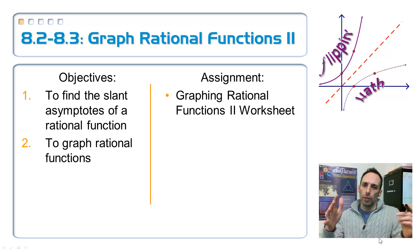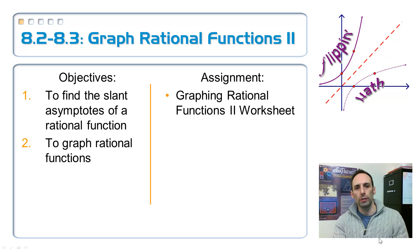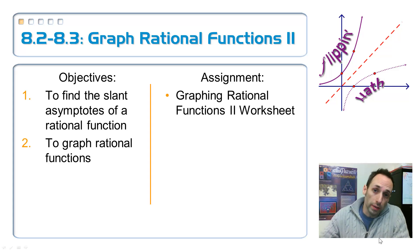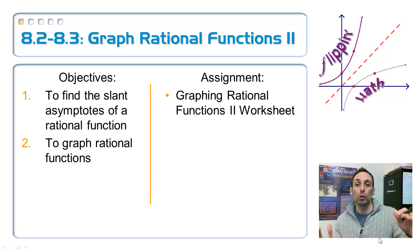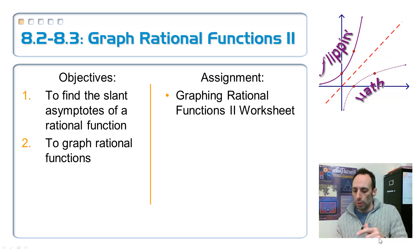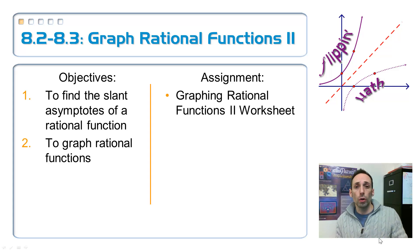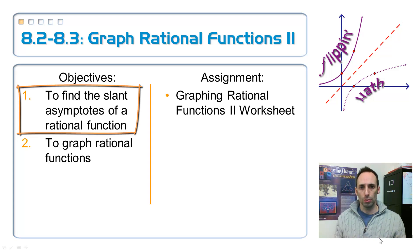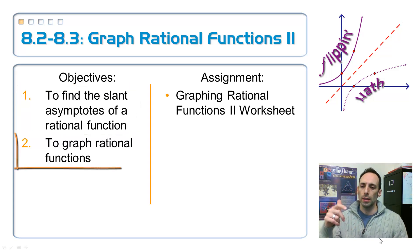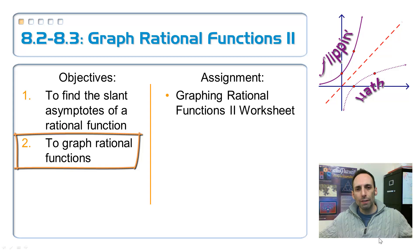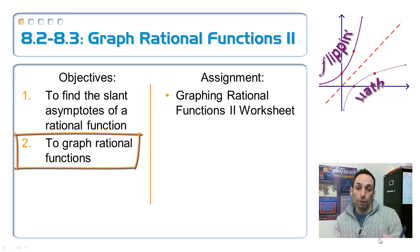Alright, here we are - the lesson you guys have been waiting for, or at least the one I've been waiting to teach. We're finally going to graph some rational functions. Last lesson we covered the domain, why we can't divide by zero, and then vertical and horizontal asymptotes. Now we're going to get a new asymptote called a slant asymptote. Then our second objective is to put everything together - all the asymptotes, zeros, x and y intercepts - and come up with some really cool rational graphs.